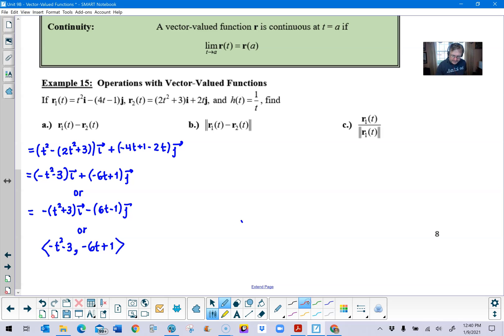Now for part b, by virtue of these symbols, you hopefully realize that this is asking you to find the magnitude. So you can find the magnitude of a vector value function the same way you would find the magnitude of a normal vector. You would take the square root of the sum of the squares of the components that make up the vector squared. So we would have the square root of negative t minus 3 squared plus negative 6t plus 1 squared.